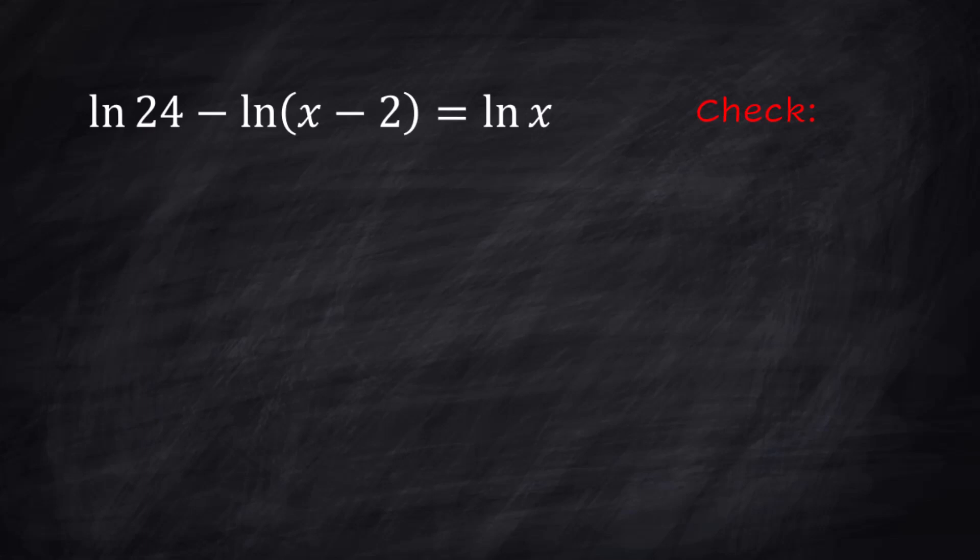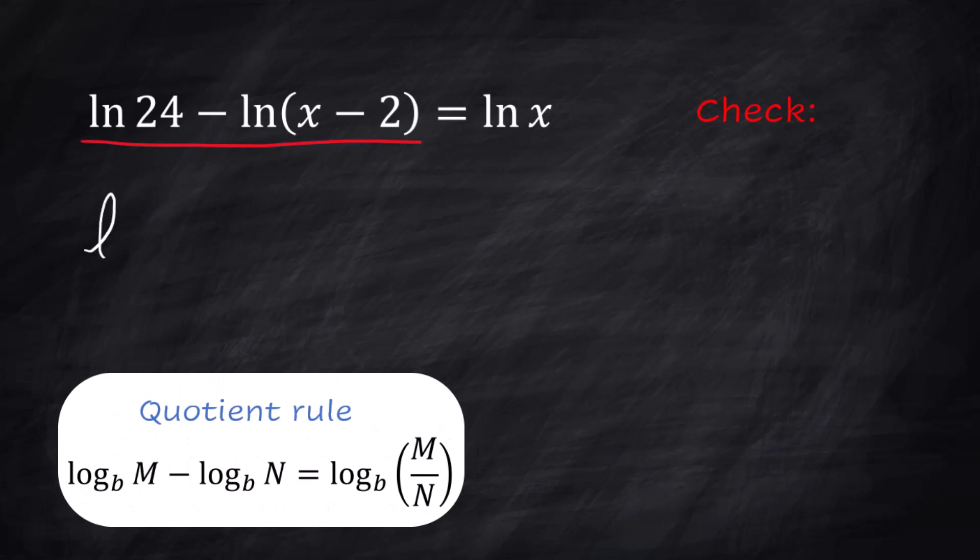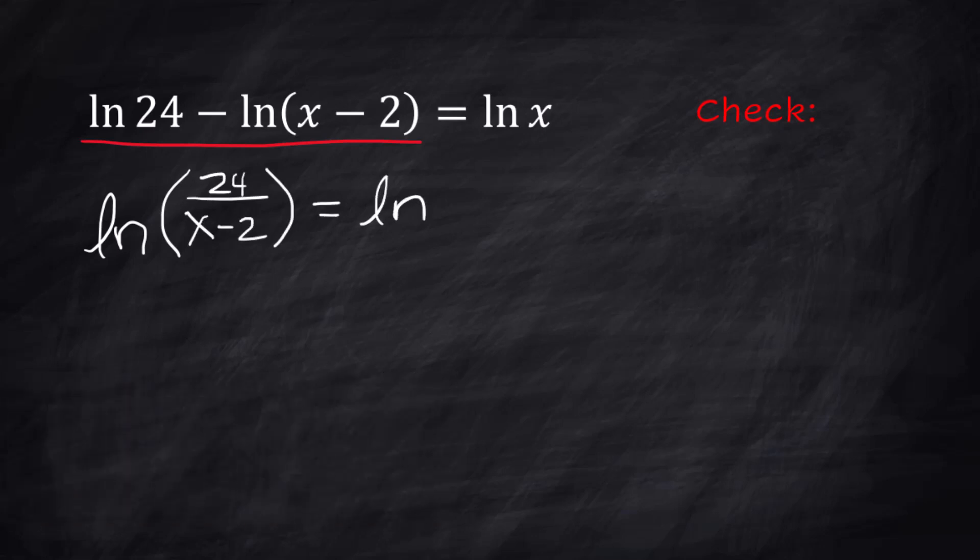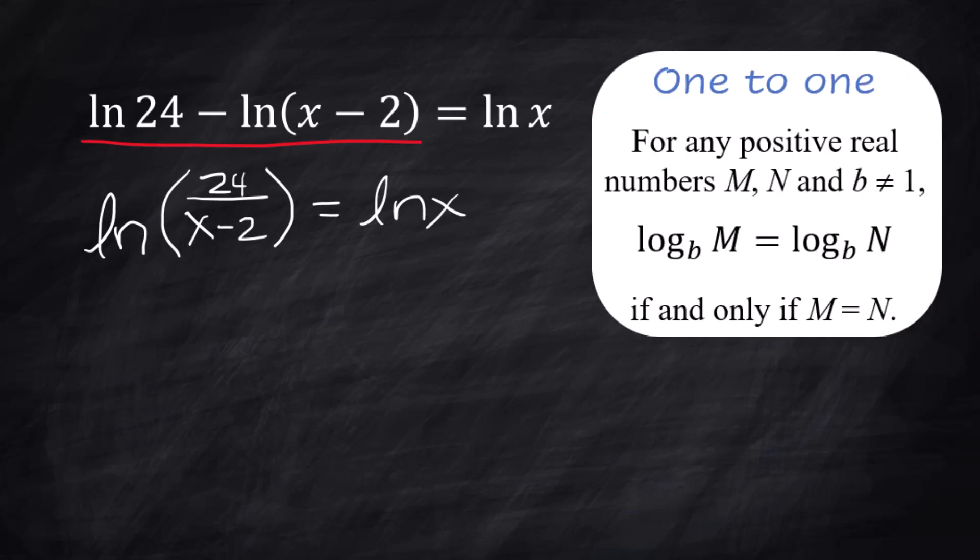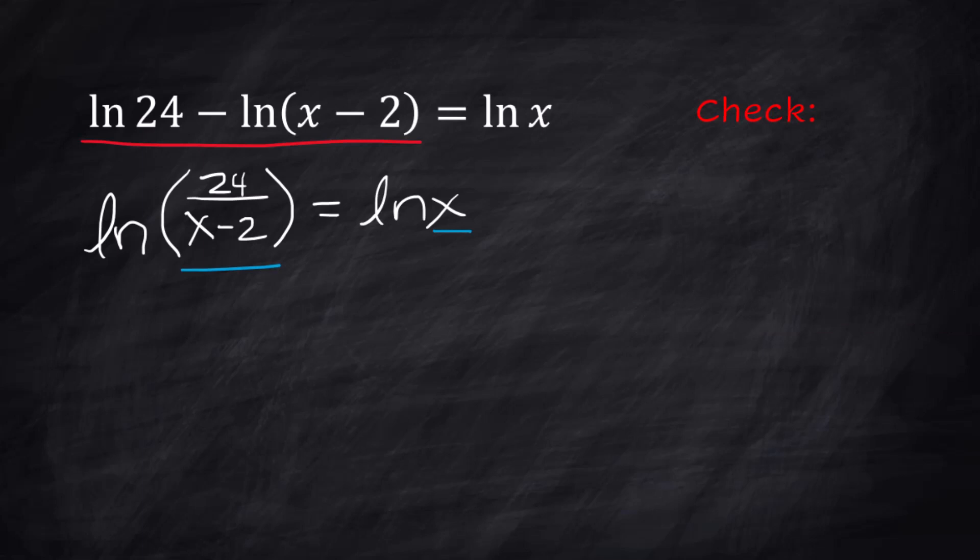For this problem, we're going to end up with two answers at the end. And one of those answers will not work. That's why the check is very important. We're going to start by using properties of logs to simplify that expression into one logarithm. Since that is subtraction, we know this started out as being a division problem. So it's the natural log of 24 divided by x minus 2. And that equals the natural log of x. Now there's another property called the one-to-one property, which tells us that if you have the natural log or any log that has the same base of two things that are equal to each other, then those two things you're taking the log of must have been equal to each other. Makes sense, right? So I'm just going to rewrite this without the logs. 24 over x minus 2 equals x.